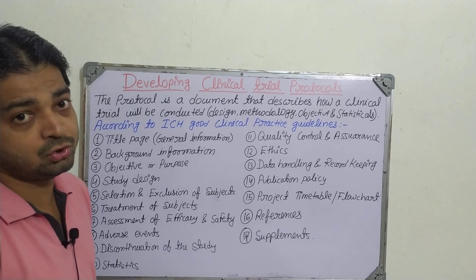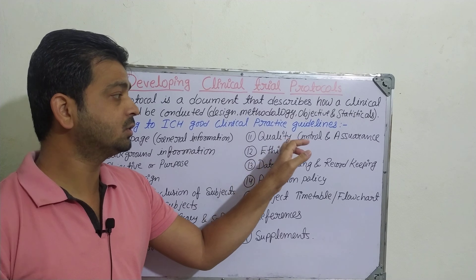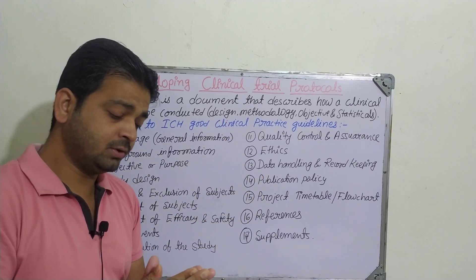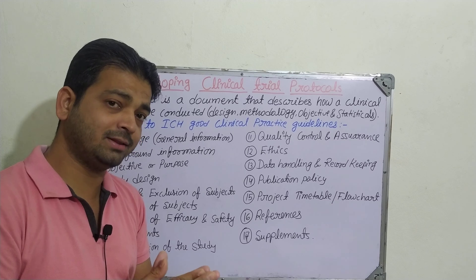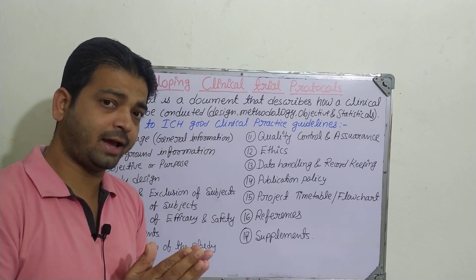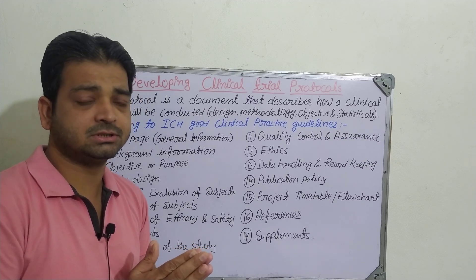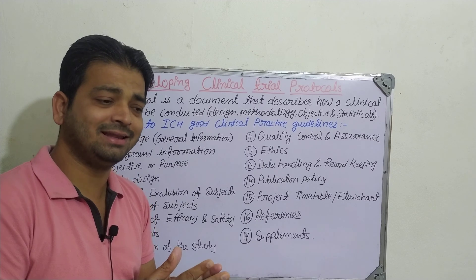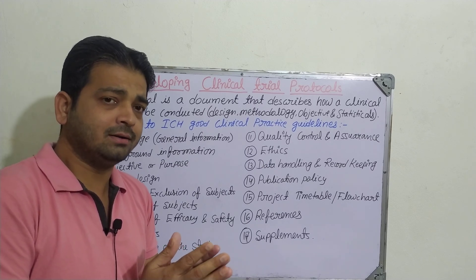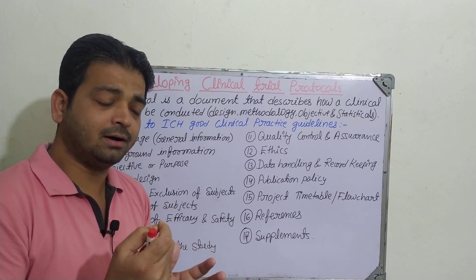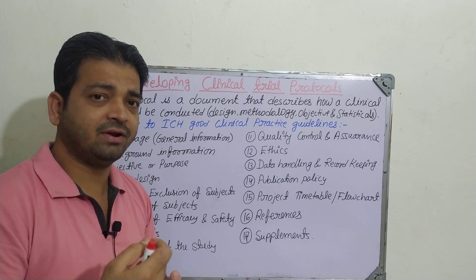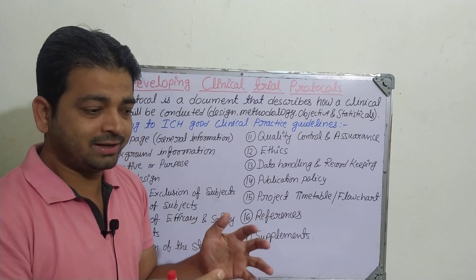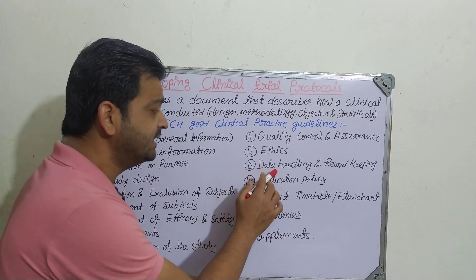Then statistics — what kind of statistical tool you are using — those things have to be revealed. The eleventh one is quality control and assurance about the particular drug: what ethics it is going to follow, whether the disease or subject selected is ethical, that it should not be a higher or severe dose, and it should not be lethal to the human volunteers. There is ethical consideration, even for animal models. We cannot use any chemical entity whose side effects and dose have not been determined in preclinical studies — we have to stay within our boundaries. Ethics have to be maintained, along with data handling and record keeping.